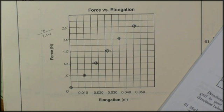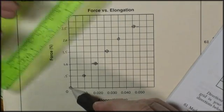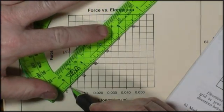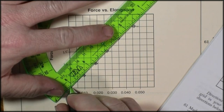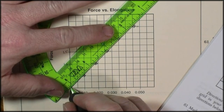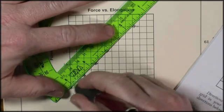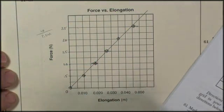We're now asked to draw a best fit line or curve. So this is a straight line, so we need to use a ruler. And we want our ruler to go right through the middle of our data points, touching as many of them as possible. And so it looks like that.